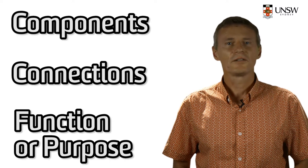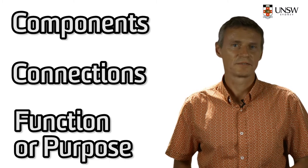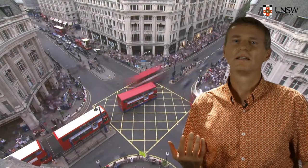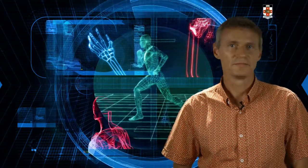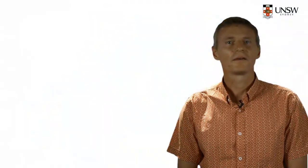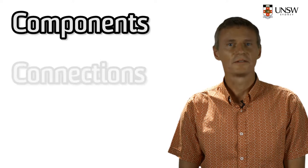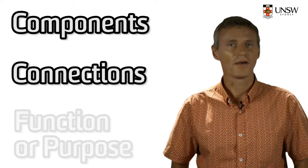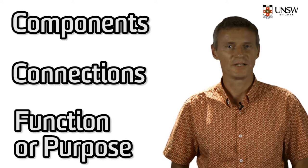Now, let's look at three examples of systems. Consider a city, a solar farm, and an organism. Can you think of what the components, the connections, and the functions of these systems are?